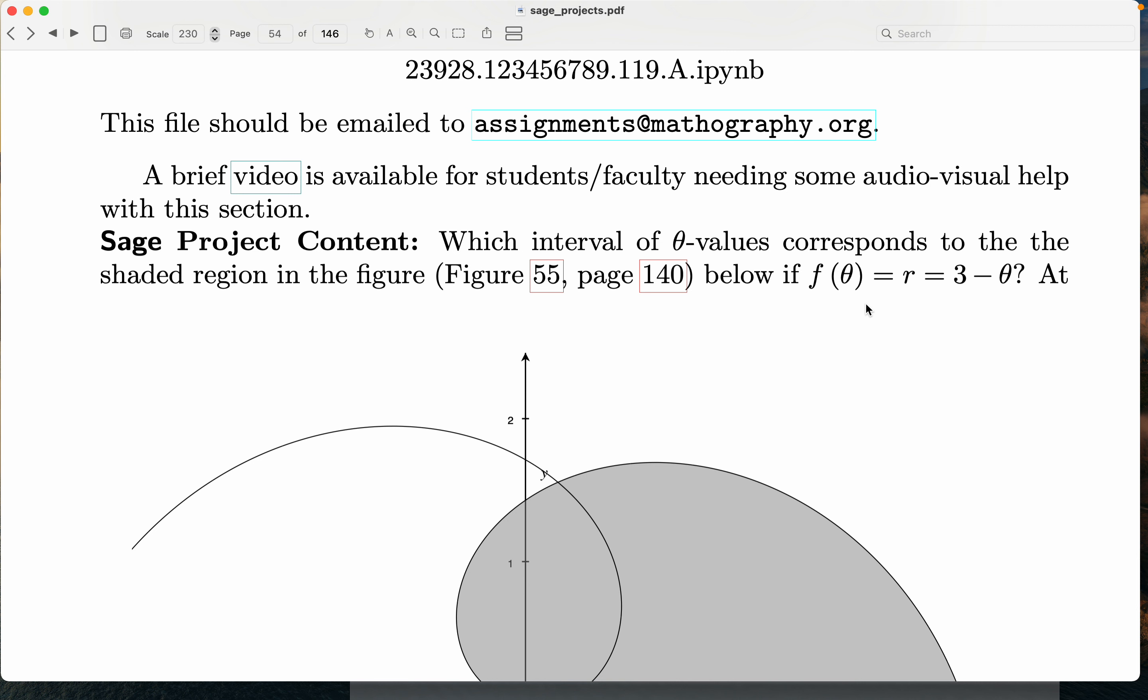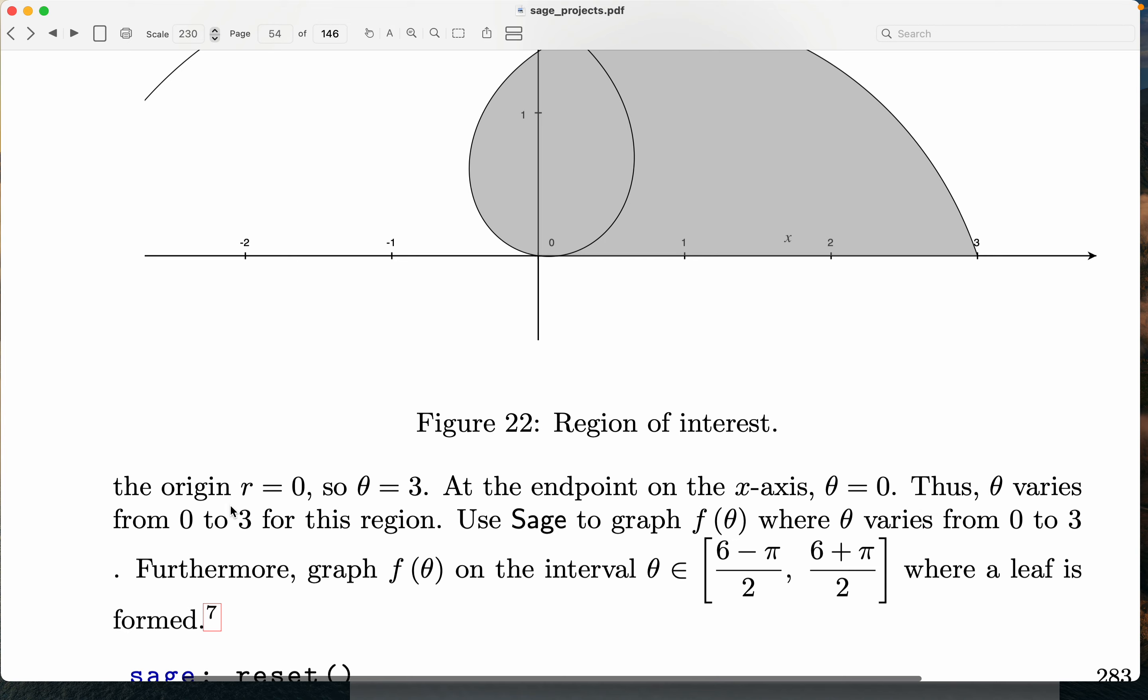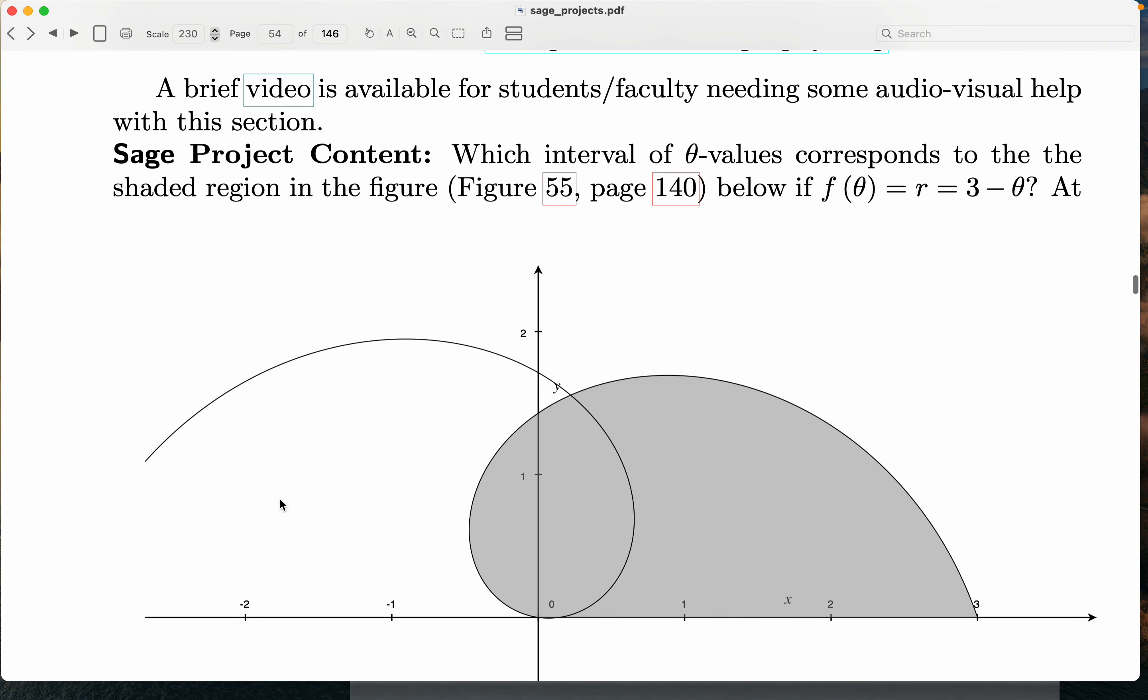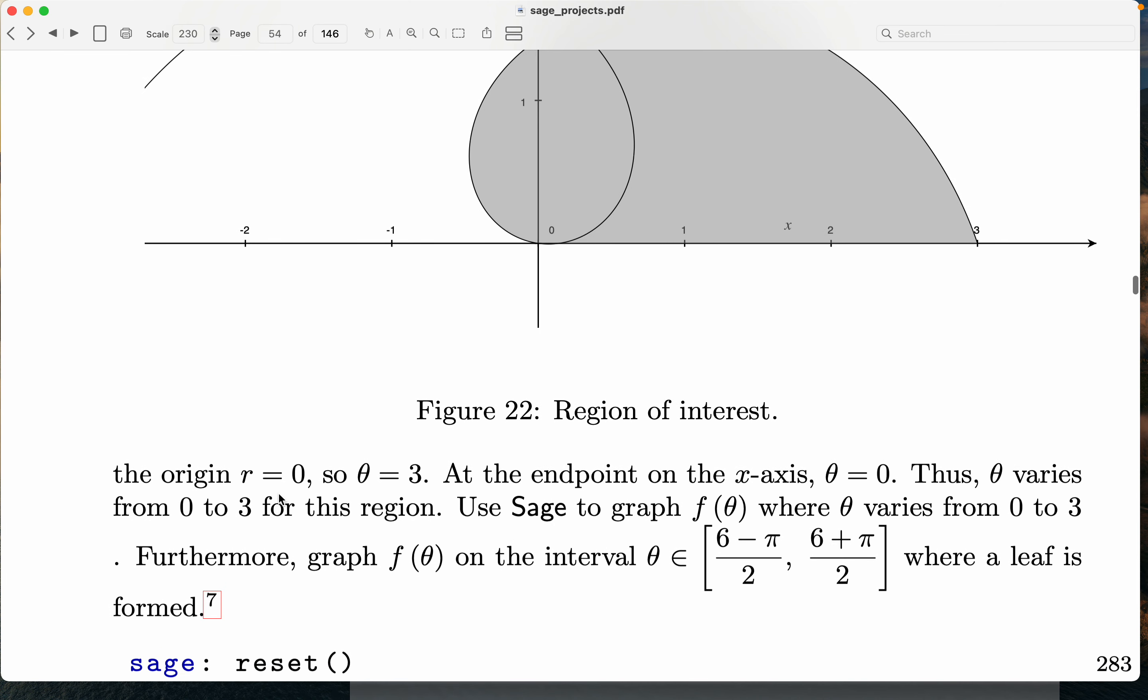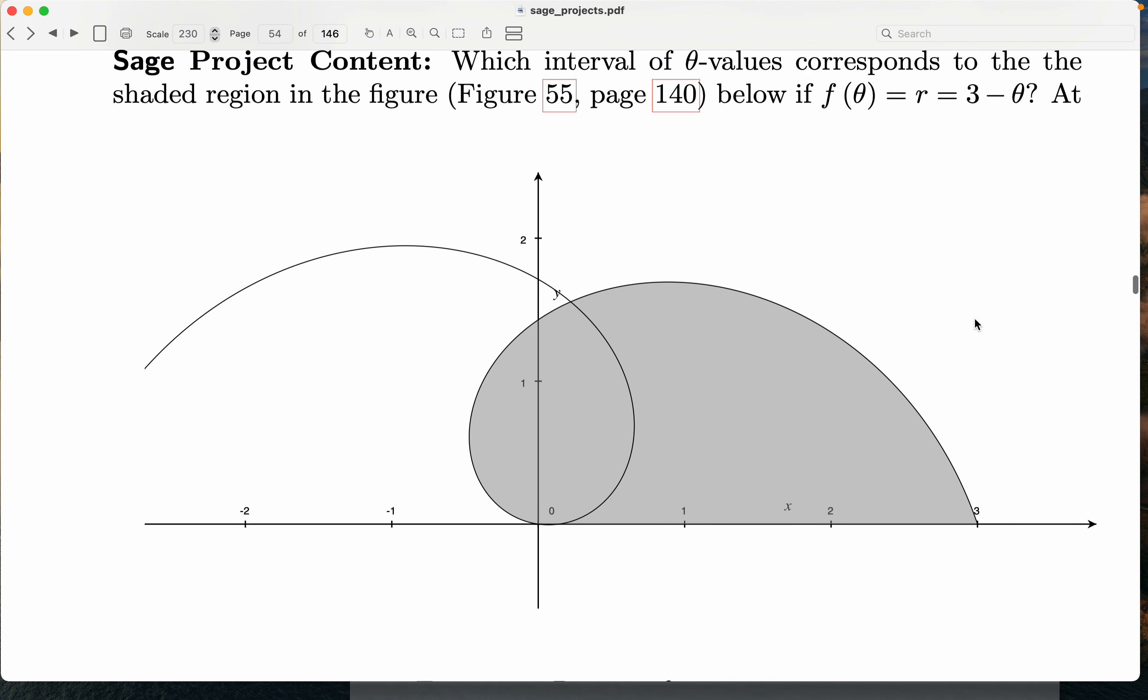But we're given a function. The function is f of theta. Let's see, f of theta is R. So R is a function of theta, and R is equal to 3 minus theta. All right? So I'm seeing that. I'm seeing the shaded region. And then I'm going to keep reading it too. It says the origin R equals 0. Let's see. At the origin. Let's read that again. At the origin, R equals 0. So let's see. Then theta would be equal to 3. That makes sense, by the way. So if R is equal to 0, theta would have to be 3, because 3 minus 3 is 0. That makes sense.